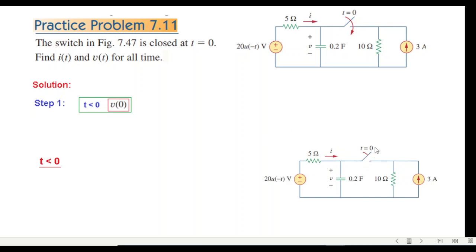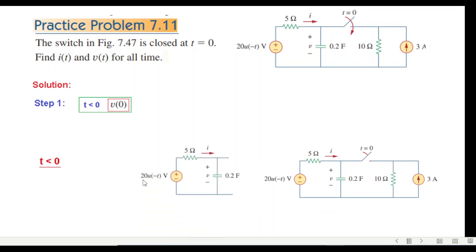Step one: for t less than zero, we need to find v0. The circuit has the switch open, and there are two loops that are not interconnected. The current flows through one resistor only and has no effect on the capacitor voltage, so that portion can be neglected, leaving us with just one part of the circuit.